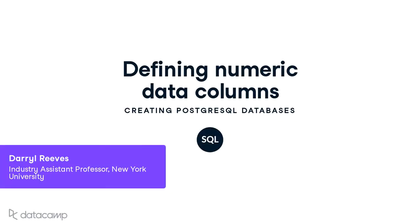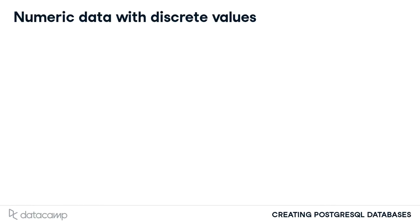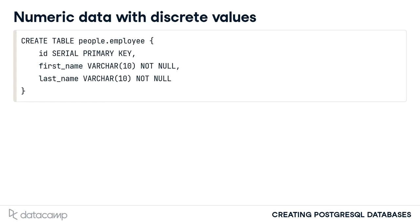Now that we've seen how to represent text data in our database, let's move on to the representation of numeric data. Imagine we are creating a database for a local retail clothing store. We will likely be interested in having a representation for the store's employees. We can store details about the store's employees in a table named employee as part of a people schema. A definition of the table is included here with some basic columns for the employees.